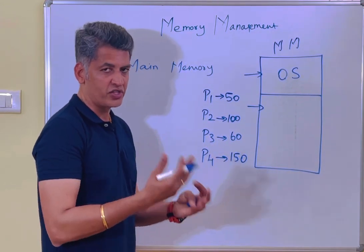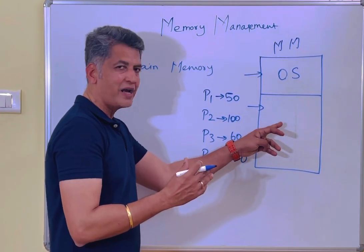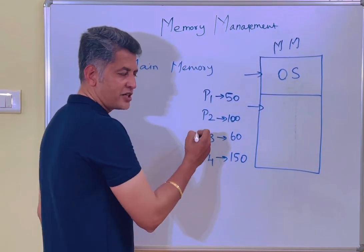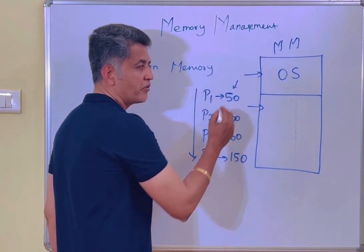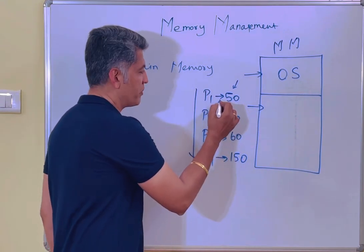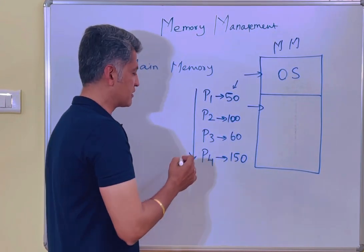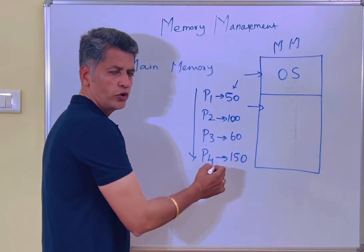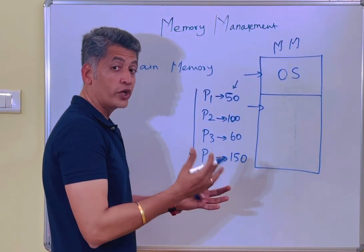Now, how may a process be executed? For process execution, some memory space will be allocated for the particular process by the operating system. There are a number of processes — each process may require some memory locations. Process 1 may require 50 memory locations, process 2 may require 100 locations, process 3 may require 60 locations, and process 4 may require 150 locations.